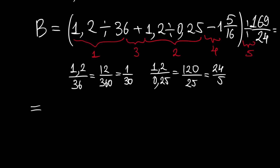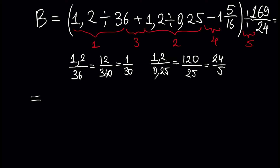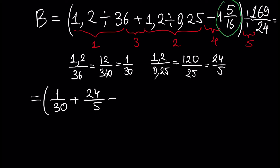Let's rewrite our B. It will be 1 over 30 plus 24 over 5 minus this fraction. By definition of fractions — watch our tutorial about features of fractions, our previous tutorial on arithmetics — we multiply 16 by 1 and write plus 5. It will be 21 over 16. And everything is divided by 169 over 24.